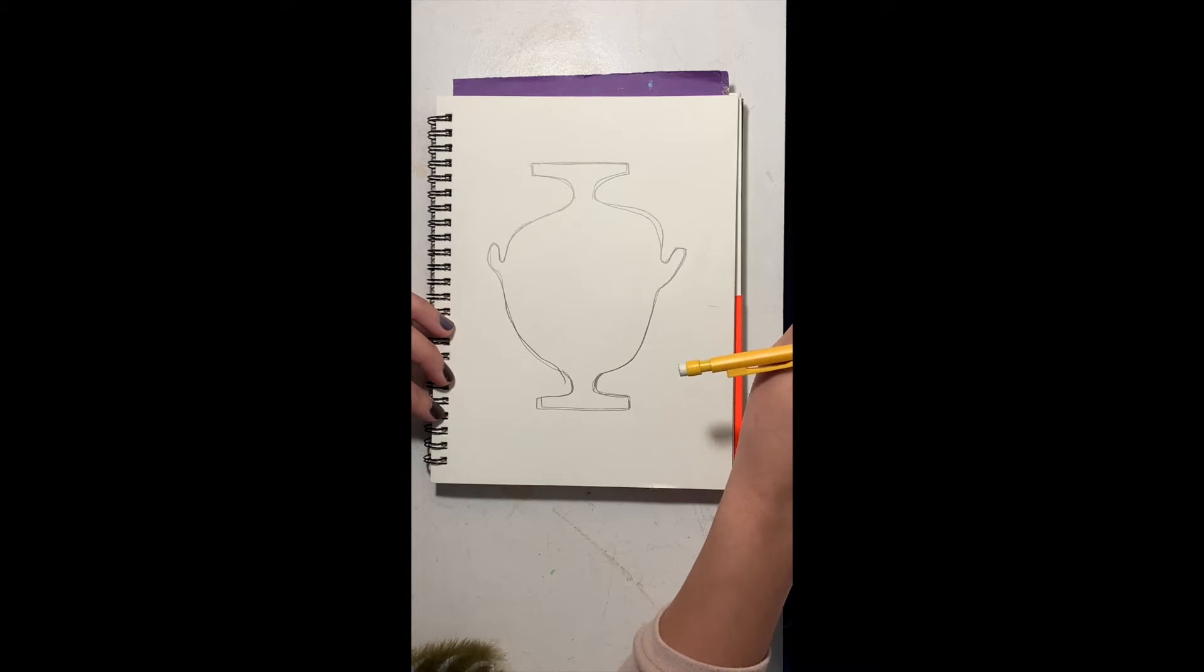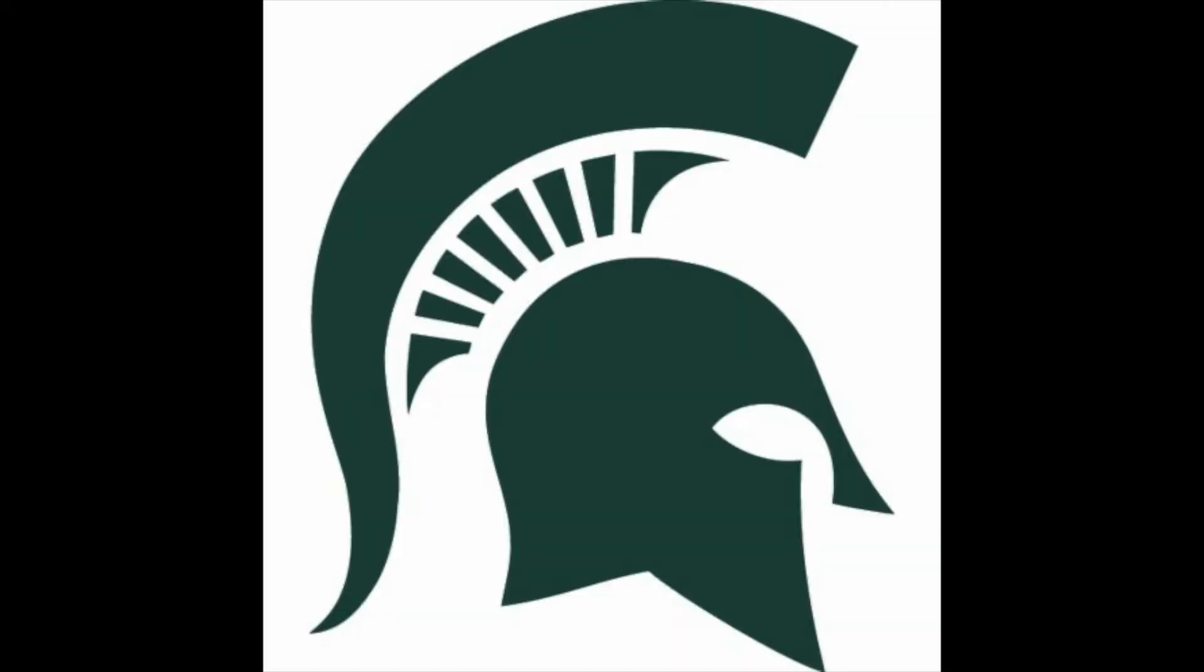Now I didn't know what to draw so I had to think about it a little bit. Remember these showed activities or sports or animals but then I remembered that I went to Michigan State and the mascot is a Spartan.